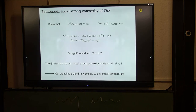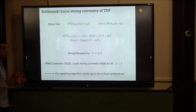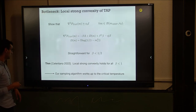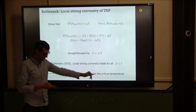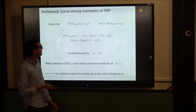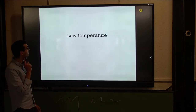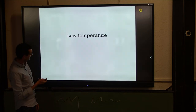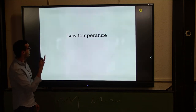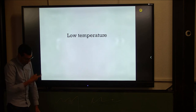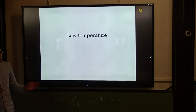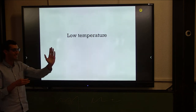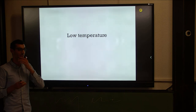That concludes the sampling algorithm, which works up to the critical temperature beta equals one. Now let me talk about low temperature — what happens for beta larger than one.